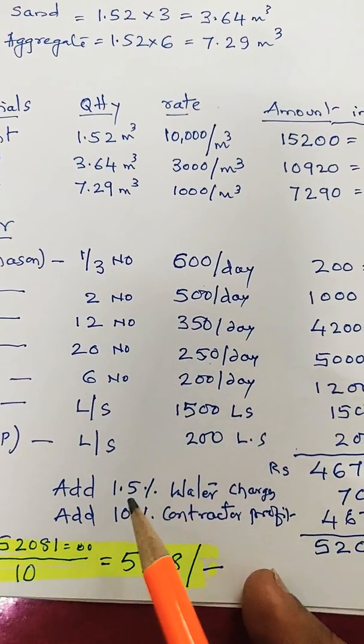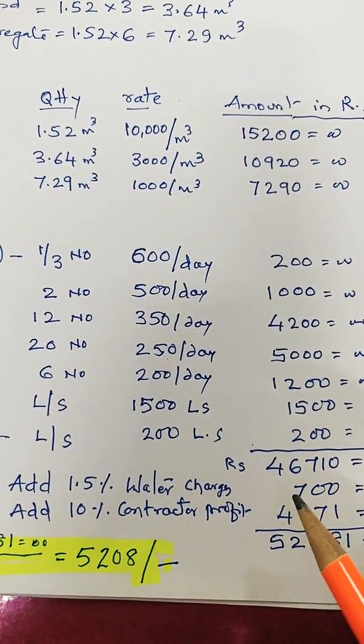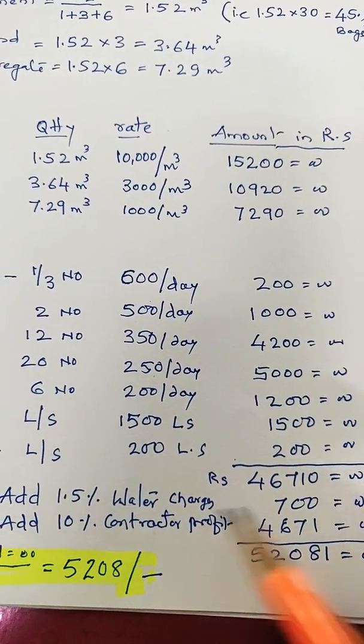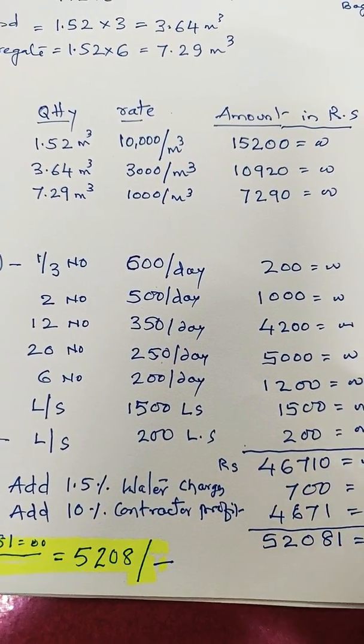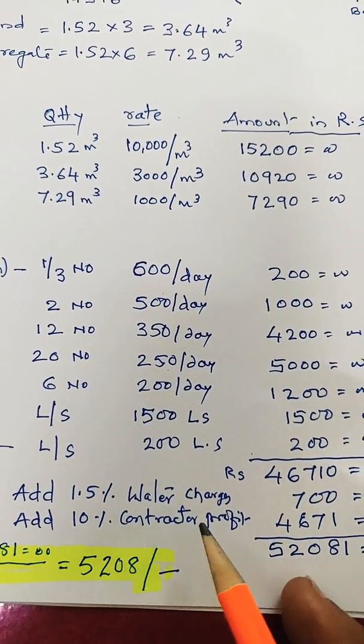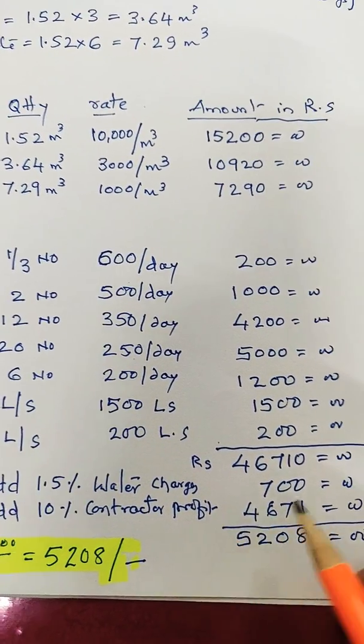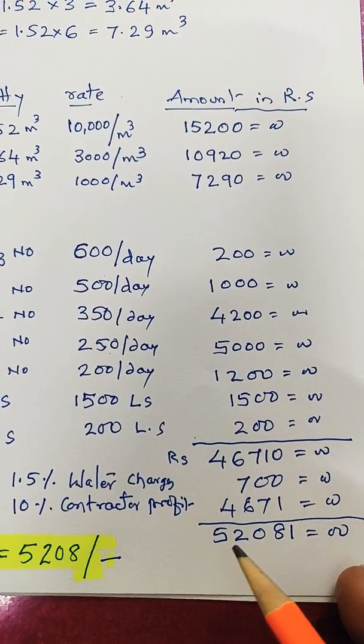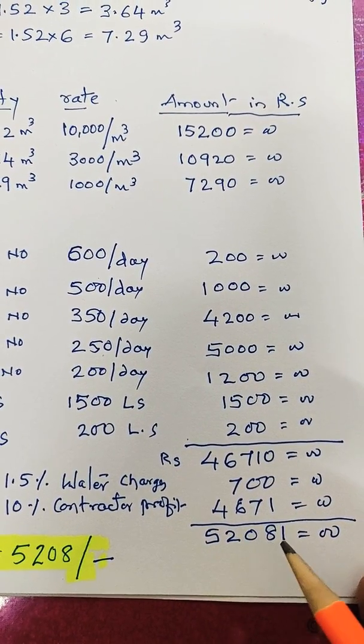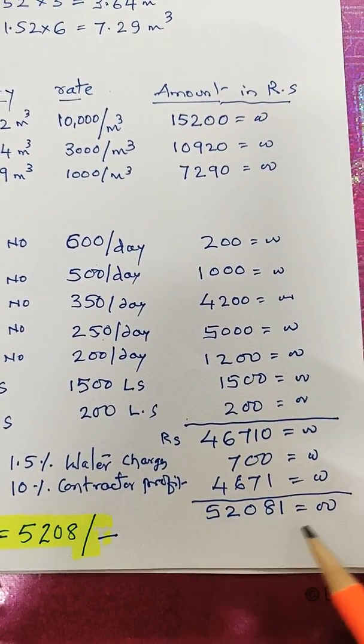Now add 1.5% water charges: 700 rupees, which is 1.5% of 46,710. Then add 10% contractor's profit, that is 4,671. Total is 52,081 rupees. So this is for 10 cubic meters.